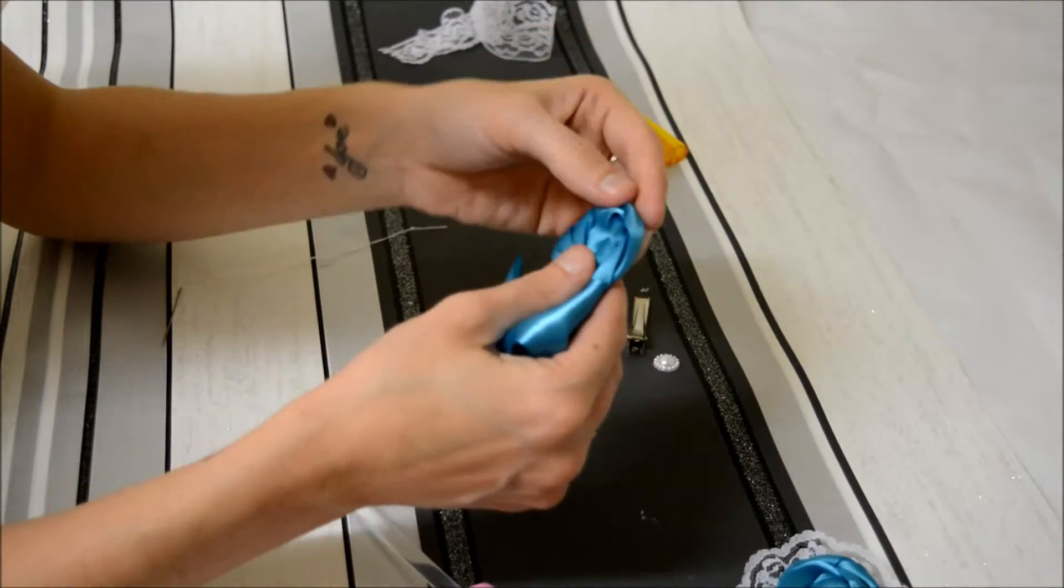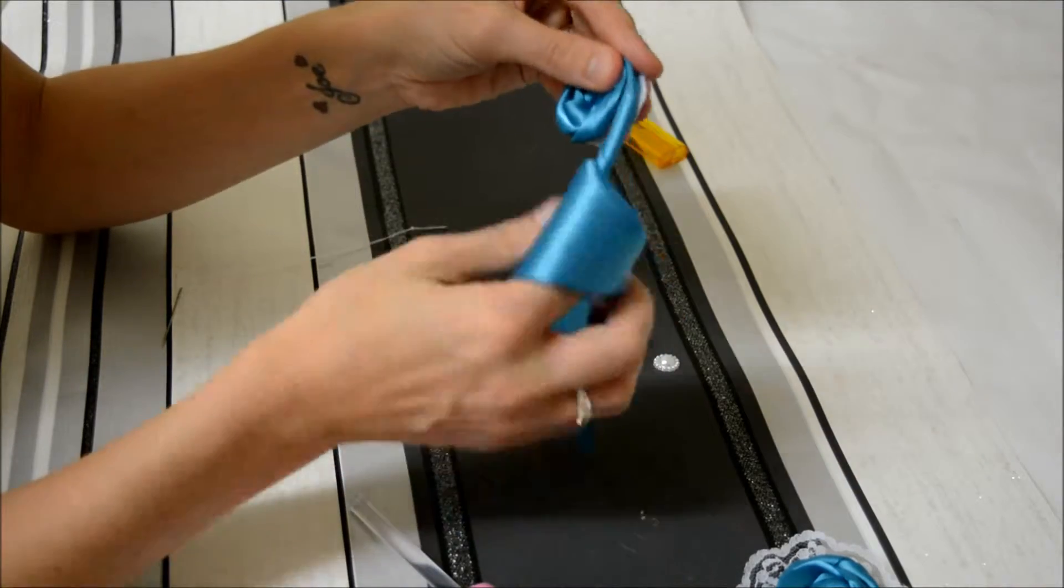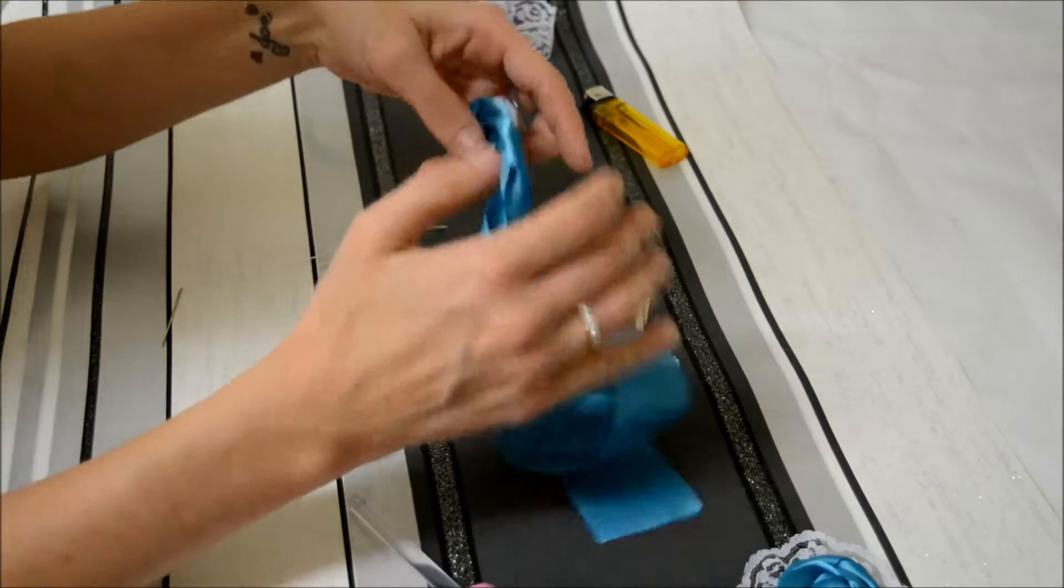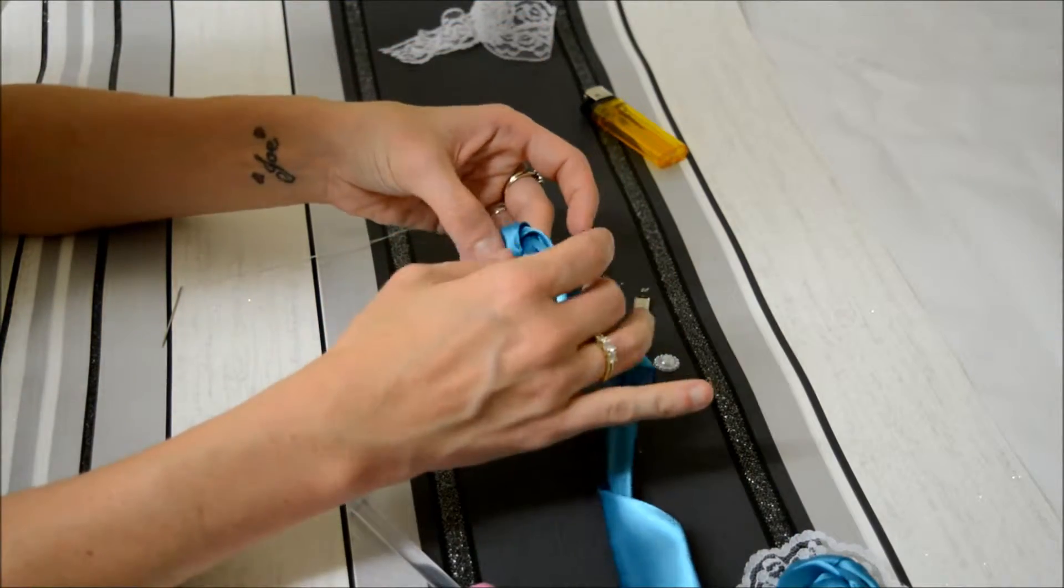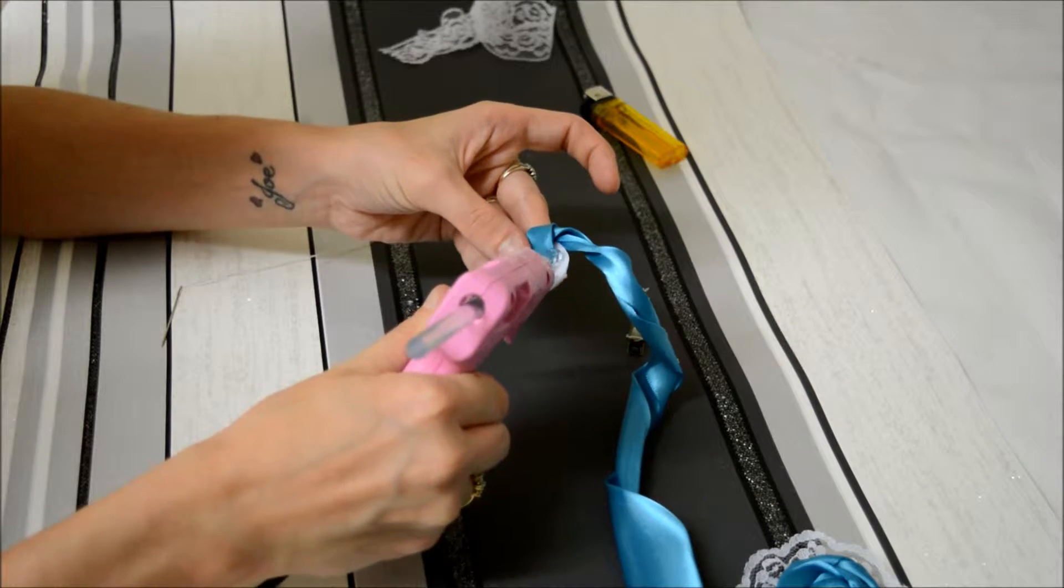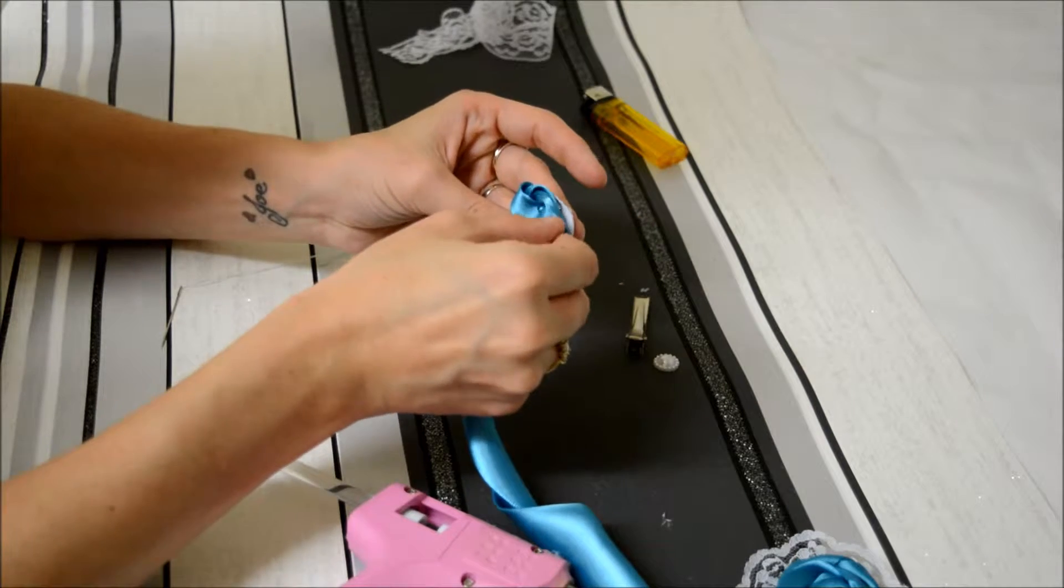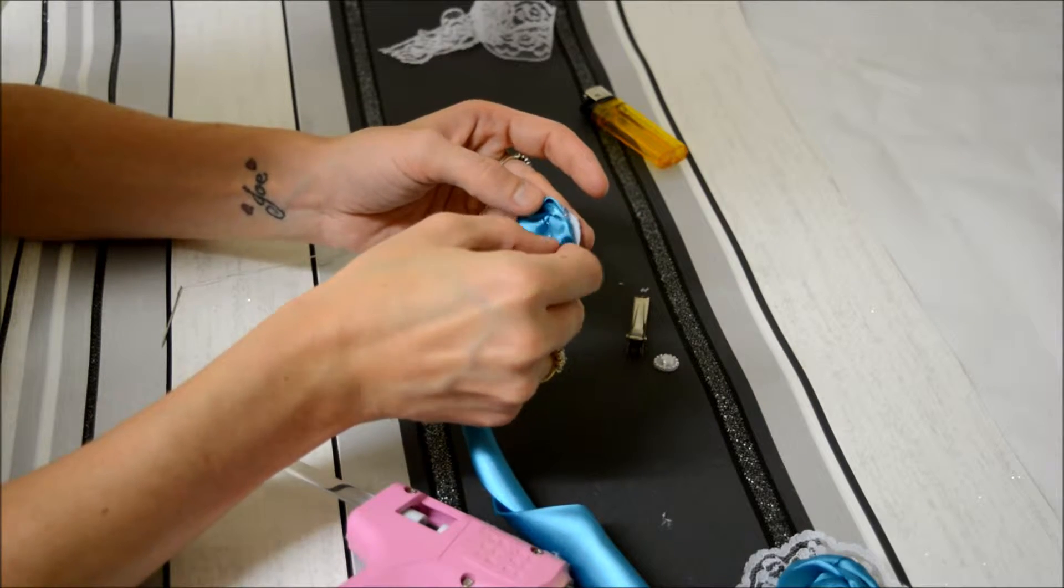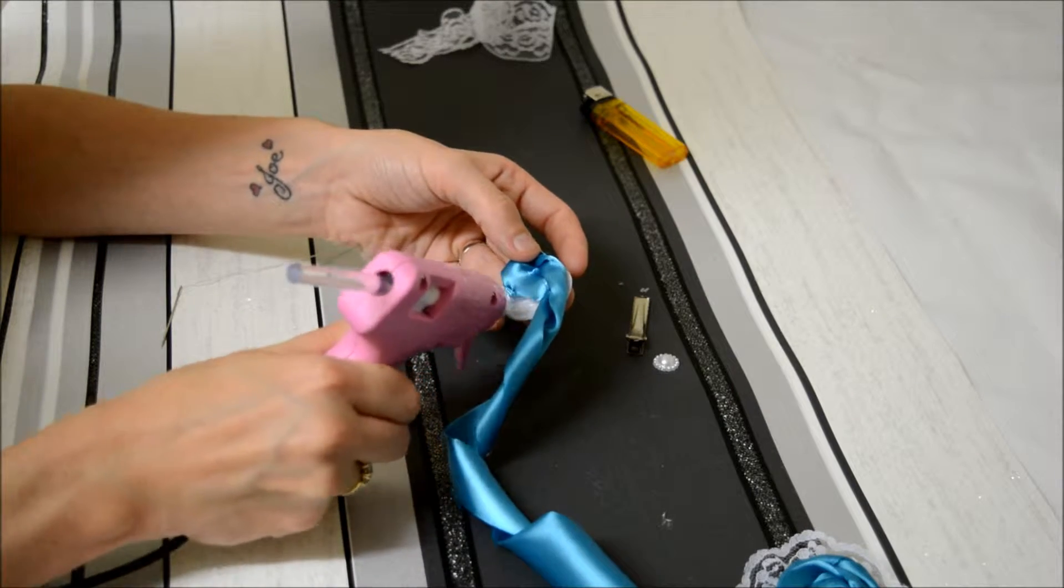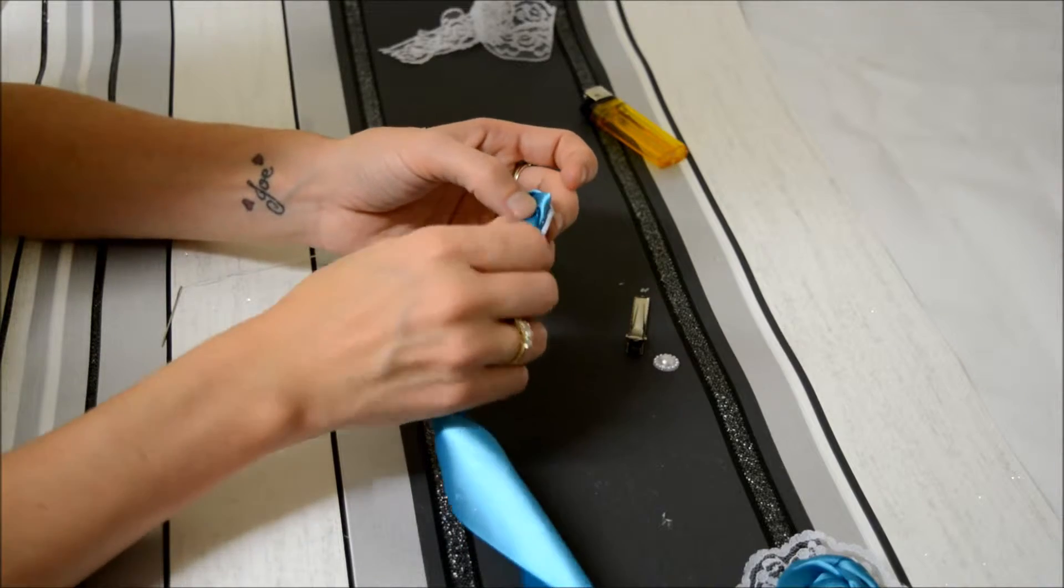Keep twisting and sticking down until you end up with something like that. I'm going to show you how I stick it all down. I'm just going to apply my glue around, keeping my twists and pushing down. Apply some more glue. Again, twist and push down.